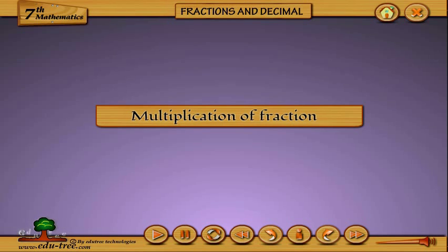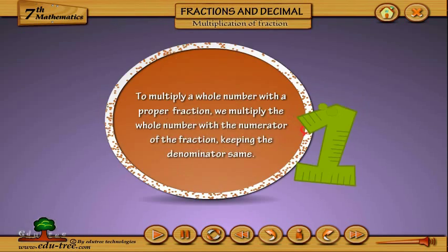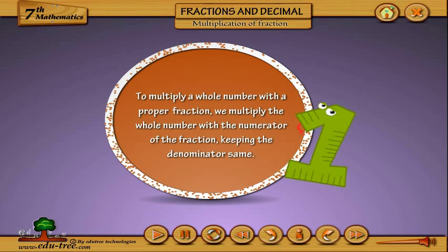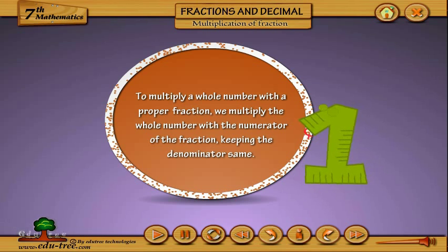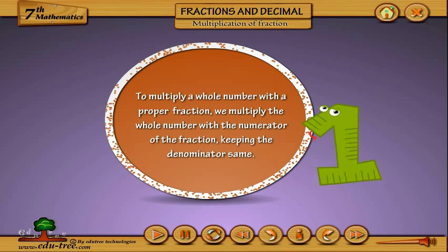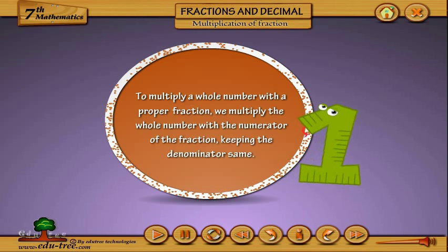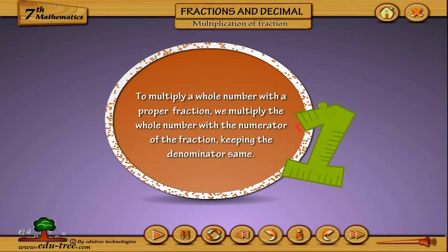Multiplication of Fractions. To multiply a whole number with a proper fraction, we multiply the whole number with the numerator of the fraction, keeping the denominator the same.